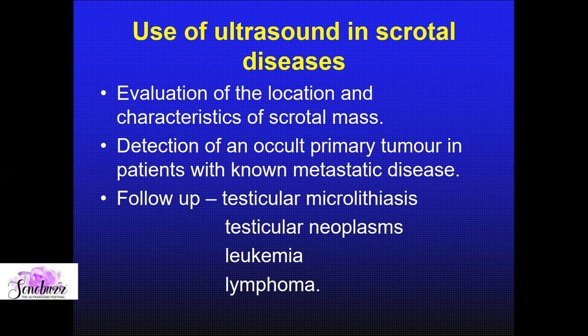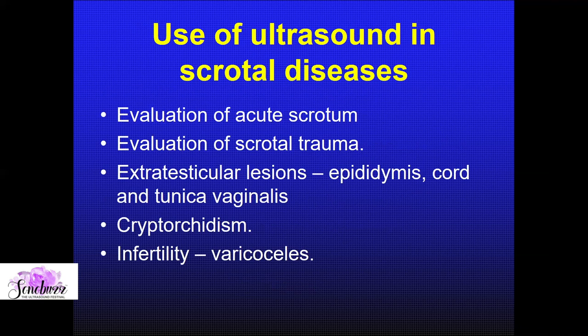Where will you use ultrasound in scrotal diseases? When a patient comes with a lump in the scrotum, you want to localize and characterize the scrotal mass. Also, when doing abdominal scanning and finding a retroperitoneal mass looking like metastatic adenopathy, you may be surprised to find a hidden primary tumor in the scrotum. In diagnosed cases of testicular masses, leukemias, and lymphomas, ultrasound picks up testicular involvement in lymphoproliferative processes. One cannot forget testicular torsion — one of the most acute emergencies in the pediatric and adult age group, especially the 17-18 age group, best evaluated with ultrasound.